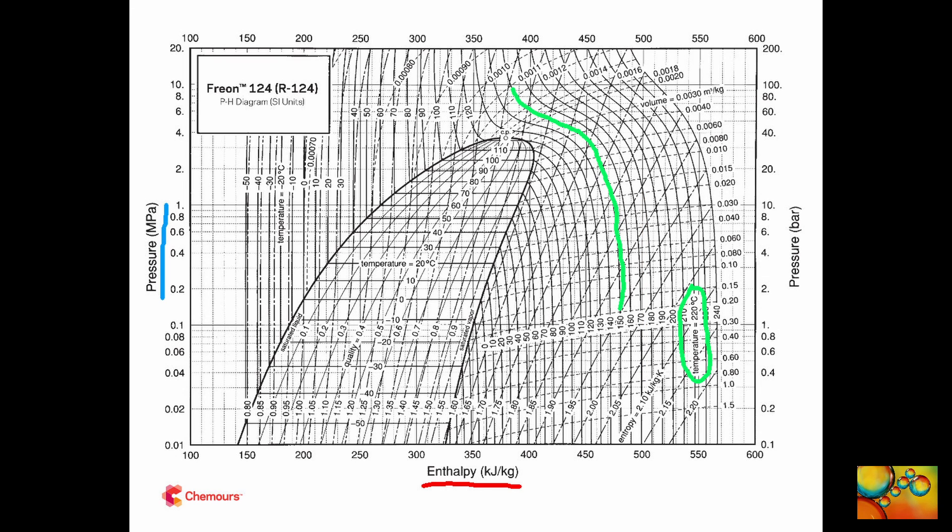Suppose that now you want to follow a process that happens at constant temperature — an isothermal process — at the temperature of 150 degrees Celsius. The first thing is to find out where the lines of constant temperature appear in this diagram. Always look for a hint. At the right hand side of the diagram, there is a line that says temperature equal to 220 degrees Celsius, indicating that lines of similar shape will be lines of constant temperature. Now it's just a matter of moving to the left until we find the line of 150 degrees Celsius.